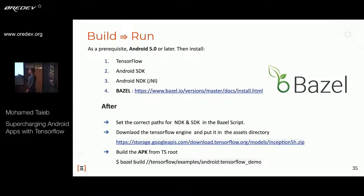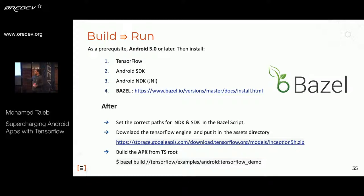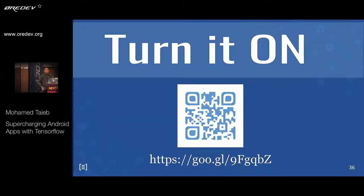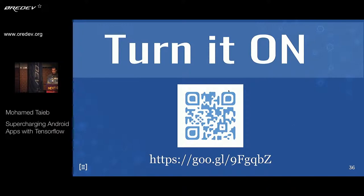When you run the build command, it first trains the machine learning, then integrates the result into the Android application, and finally builds the APK. I did it for you — if you want to try the application and have a QR code reader, you can download it from here, or use the short link. Let's see how it works through a demo.